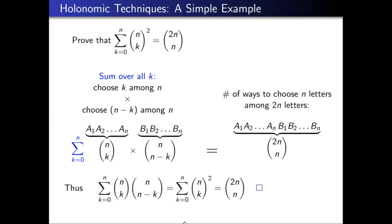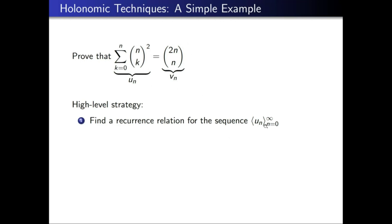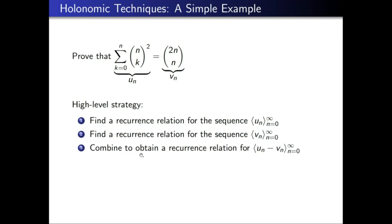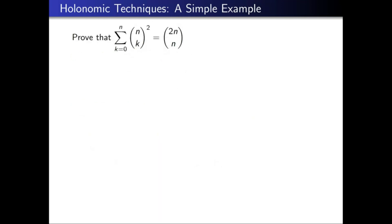Knuth would call this 'art' — a cute argument, not systematic. How might we make it systematic? This is where holonomic techniques come in. Label the left-hand side u_n and the right-hand side v_n. The high-level strategy: find a recurrence relation for u_n, find one for v_n, deduce a recurrence for u_n − v_n, verify that u_n − v_n is identically zero by checking initial values, and then by induction u_n equals v_n.